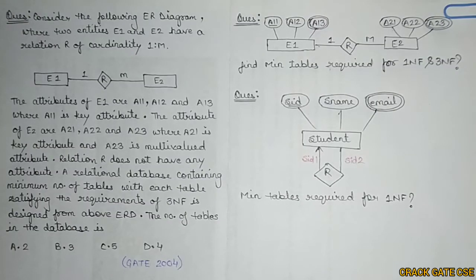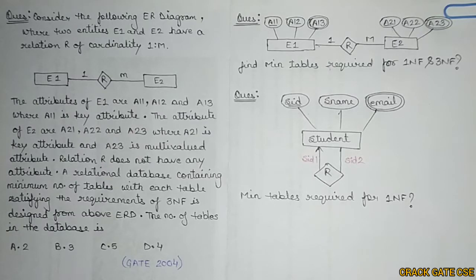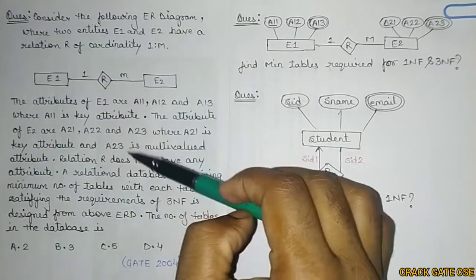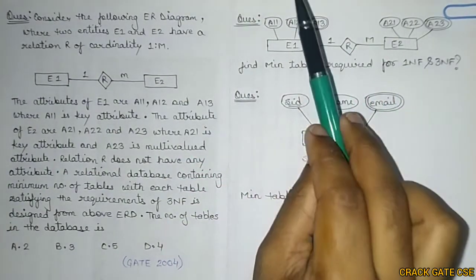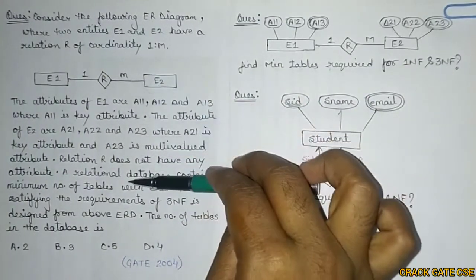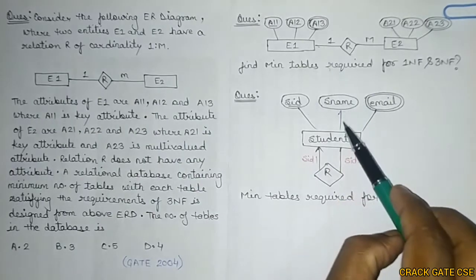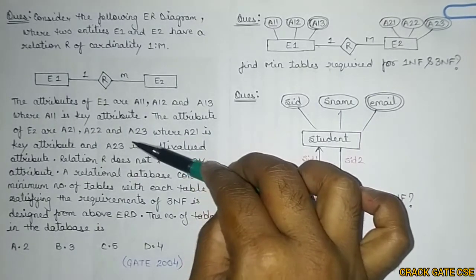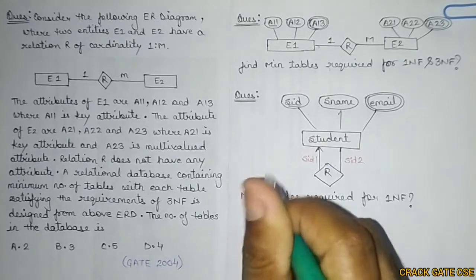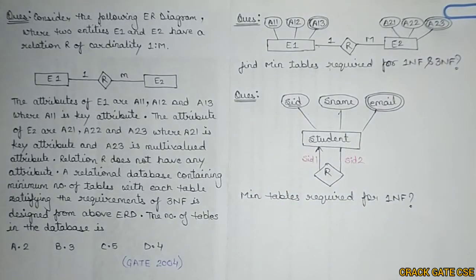Hello friends, welcome to CrackGate CSE. In this series on databases, today we will be practicing some previous year GATE questions on minimization of ER diagrams. So far we have completed many examples where we tried to minimize the ER diagram, but here we are talking about a different case when multi-valued attributes are present. This was a question which came in GATE 2004, and after solving it we will see some variations.